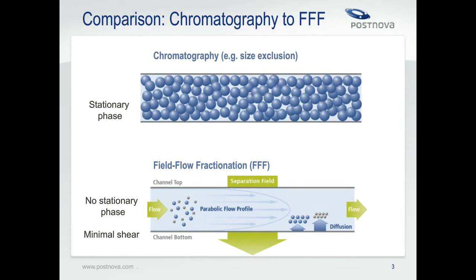FFF does not use a packed column for separation. The column chromatography technique most commonly compared with FFF is size exclusion chromatography, or SEC, due to the overlap in separation range for small nanoparticles. In SEC, the column is filled with a porous packing material which smaller particles diffuse into, causing them to take a longer route through the column, while larger particles can bypass the pores and elute faster. Therefore, with SEC, we observe a size separation with large particles followed by smaller particles.